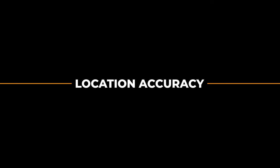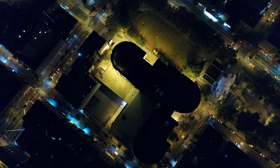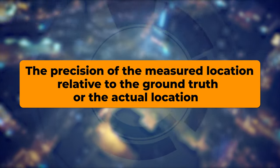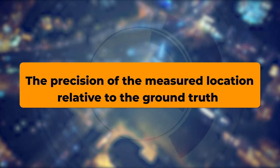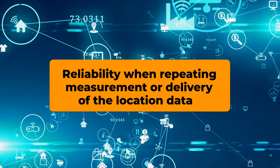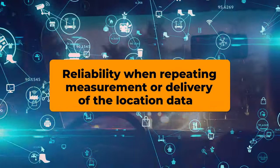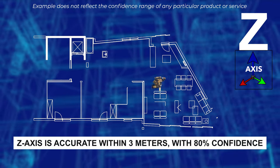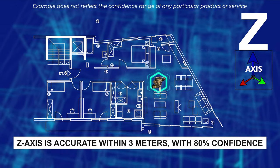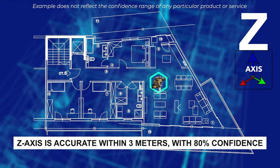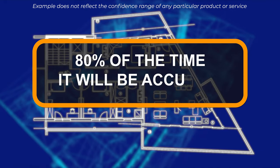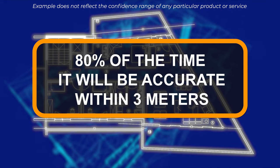Location accuracy refers to the precision of the measured location relative to the ground truth or the actual location. There is a component of confidence or reliability when repeating the measurement or delivery of the location data. For example, the z-axis is accurate within 3 meters with 80% confidence. This means that when taking multiple measurements to deliver the z-axis location, 80% of the time it will be accurate within 3 meters.